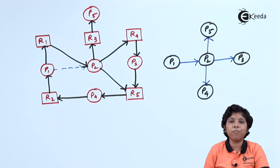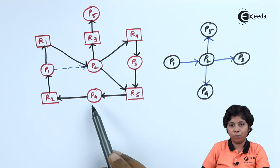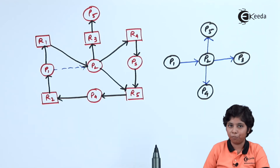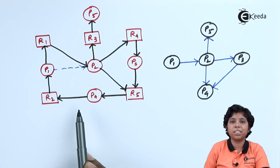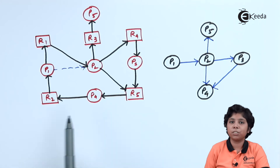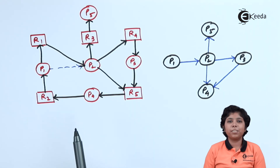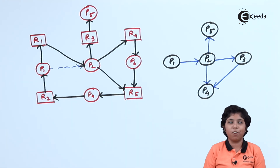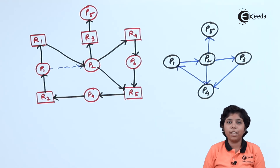Now considering P3 and P4: process P3 is also requesting R5, which is allocated to P4, so there exists an edge from P3 to P4. The last case is resource R2, which is allocated to process P1, and process P4 is requesting it. So process P4 must wait for process P1 to release resource R2, meaning there exists an edge from P4 to P1.